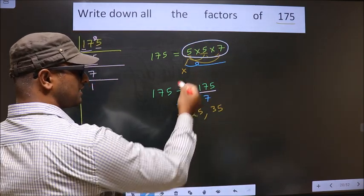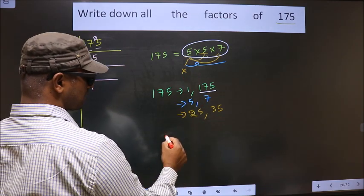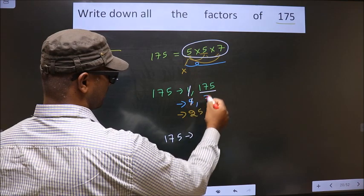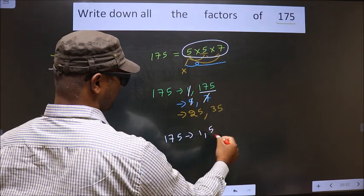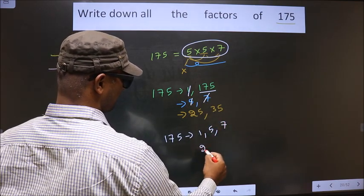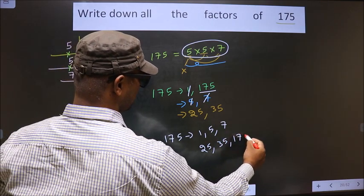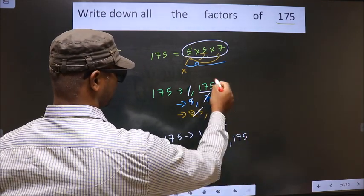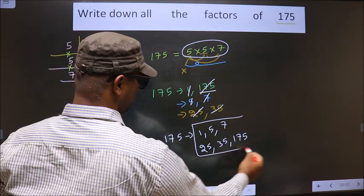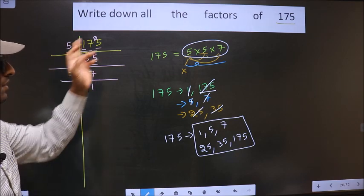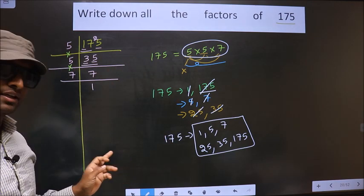Thus these are all the factors of 175. That is 1, 5, 7, 25, 35, 175. These are all the factors of 175. Am I clear?